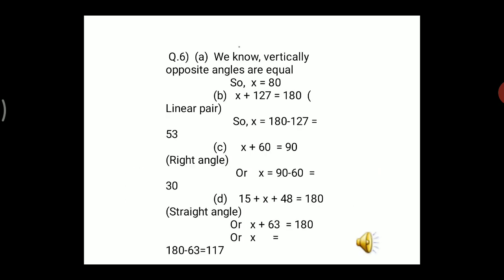Question 6: find the values of x in the following figures. In part a, x and 80° are vertically opposite angles. As proved yesterday, vertically opposite angles are equal, therefore x = 80°.